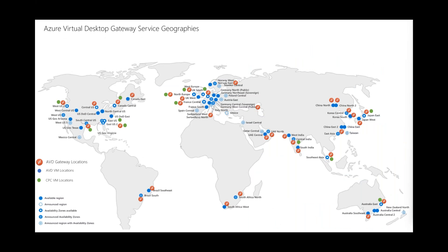This globe shows all the gateways mentioned. Red dots represent gateway locations — most of the globe is covered and you connect to the closest one for lowest latency. Blue dots represent Azure regions where you can deploy AVD VMs. Green dots represent the Azure regions where you can currently place Cloud PC VMs — 13 regions at this point in time.